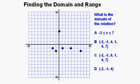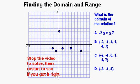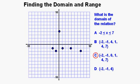Now solve this multiple-choice problem: what is the domain of the relation? Stop the video to solve, then start to see if you got it right. The correct answer is C: negative 2, negative 1, 0, 1, 4, and 7. All the other answers have at least one thing wrong. Answer A is pretty tricky but doesn't work because the graph points are discrete data, while the inequality shows continuous values between x equals negative 2 and x equals 7.